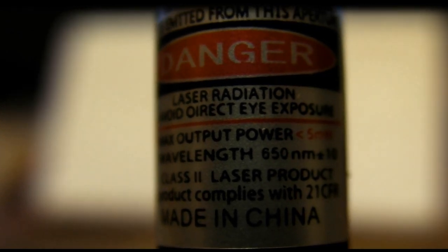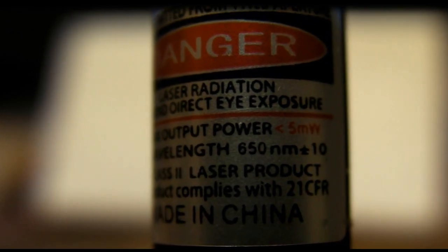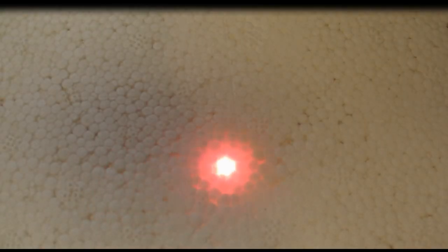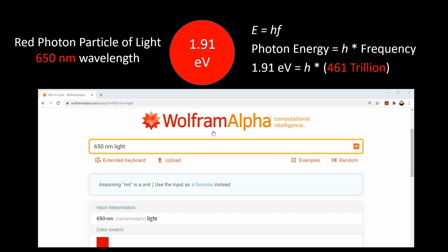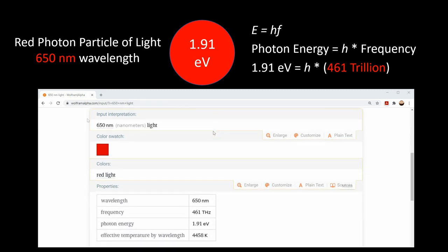For our experiment, we can use this red laser pointer that has a wavelength of 650 nanometers. This defines our red photon particle of light, 650 nanometer wavelength, and 1.91 electron volts for the energy of this photon. Now let's verify the data with Wolfram Alpha. We have 650 nanometer red light, and we have 461 terahertz, or 461 trillion, and a photon energy of 1.91 electron volts.